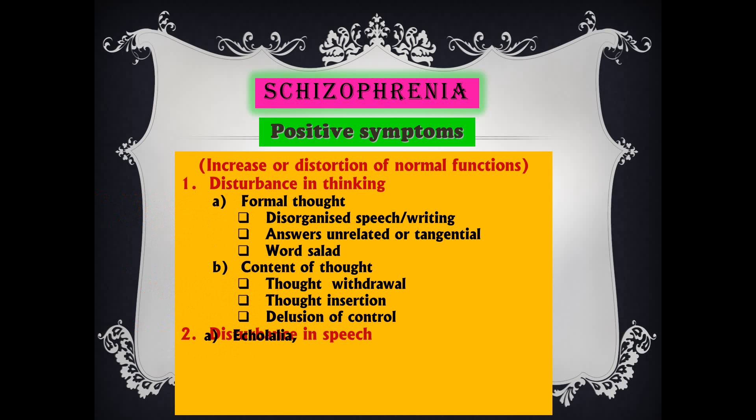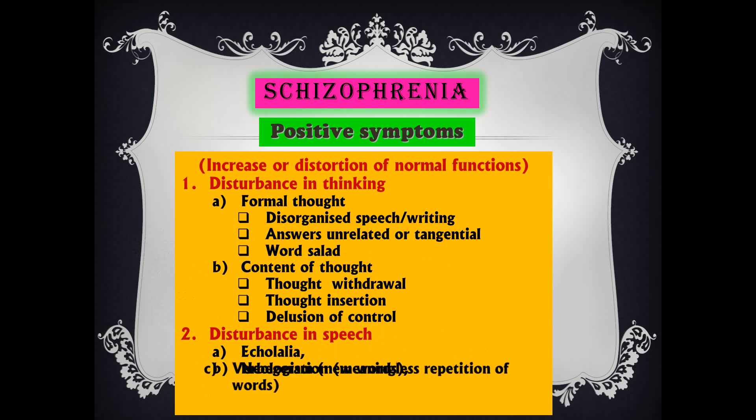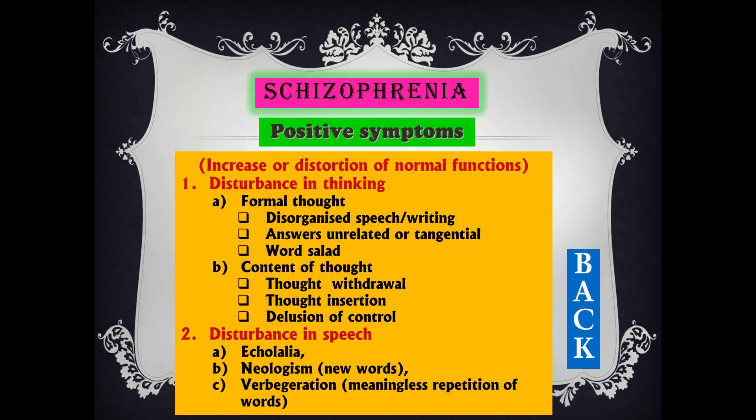Then disturbance in speech: echolalia means repeating the same word again and again — when you ask a patient 'what is your problem?' he says 'problem, problem, problem,' repeating your own question. Then neologism — forming new words which have no meaning. Then verbigeration — meaningless repetition of words. So those are the positive symptoms found in schizophrenia.